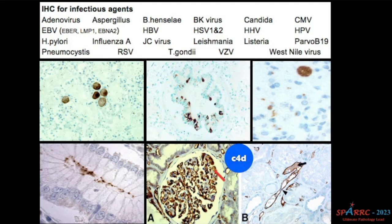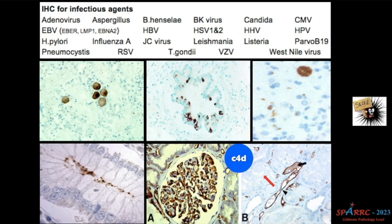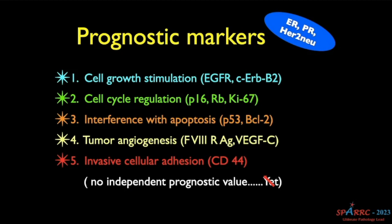C4D is normally positive in the glomeruli, but when it is positive in a membranous pattern in peritubular capillaries, that indicates antibody-mediated rejection — previously called hyperacute rejection. C4D is very important in the diagnosis of antibody-mediated rejection in any organ — kidney, liver, any organ. Vascular positivity for C4D in a continuous membranous pattern is diagnostic of antibody-mediated rejection.